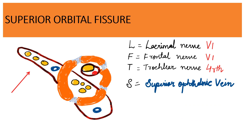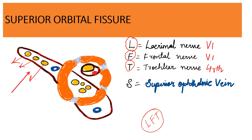Now let us talk about the contents of the superior orbital fissure. The superior compartment has three nerves, remembered with the mnemonic LFT — like liver function tests. Through the superior compartment passes the lacrimal nerve (L), the frontal nerve (F), and the trochlear nerve (T), which is the fourth cranial nerve.